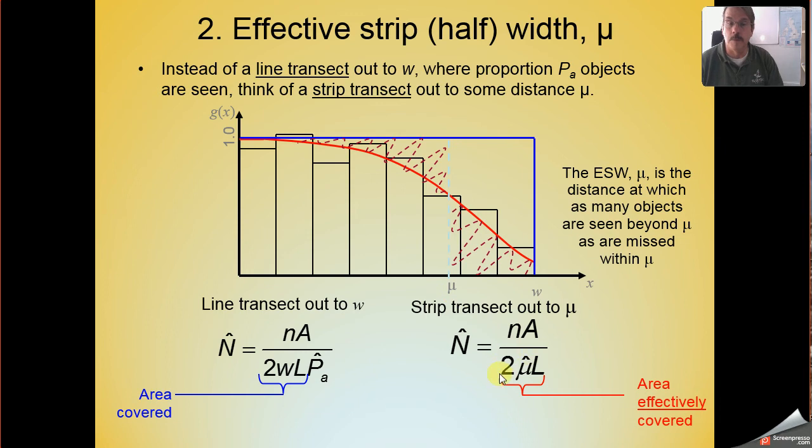And the size of our covered area, multiplied by this quantity P sub a that adjusted for imperfect detectability, we can now think about that as if we had a strip transect out to this distance mu. And so our denominator now becomes the product of P sub a multiplied by w is now equivalent to this quantity mu that is estimated, mu hat. So that's the area effectively covered by our sampling, is 2 mu hat times L, so that allows us to estimate abundance.